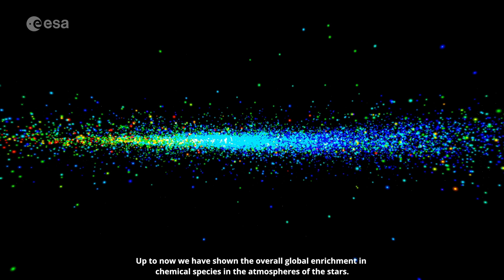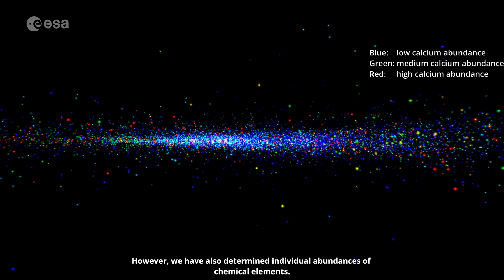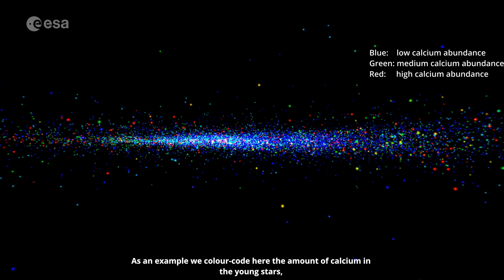Up to now, we have shown the overall global enrichment in chemical species in the atmospheres of the stars. However, we have also determined individual abundances of chemical elements. As an example, we colour-code here the amount of calcium in the young stars, an element which is, for instance, important for the stability of our bones.